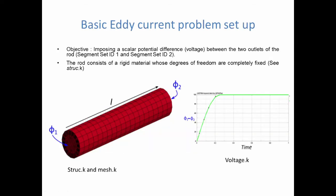So from the website, we have downloaded this very simple input deck, a very simple mesh there, which is basically just a rod with two segment sets, segment set 1 and segment set 2. The objective of this input deck will be to impose a scalar potential difference or voltage basically, between the two outlets of this rod, between the two segment sets.